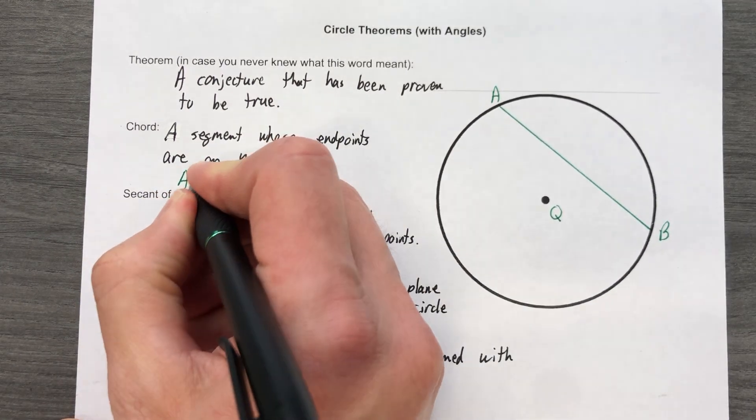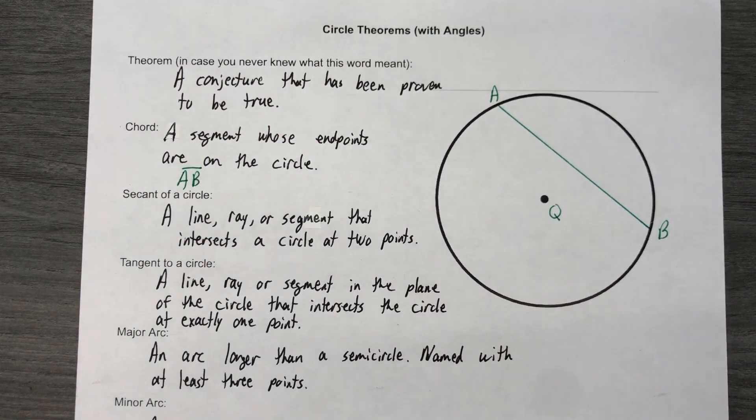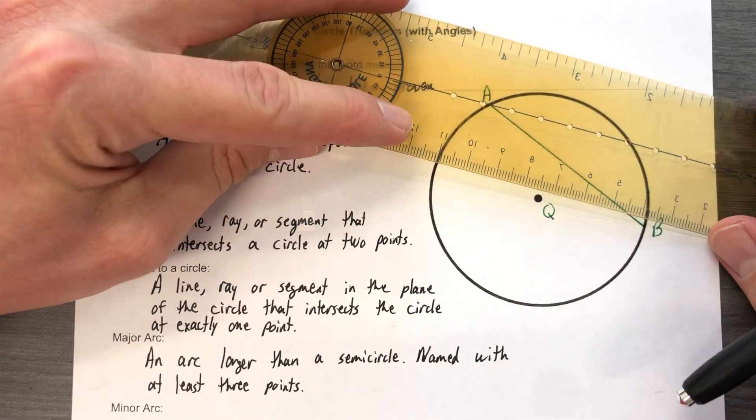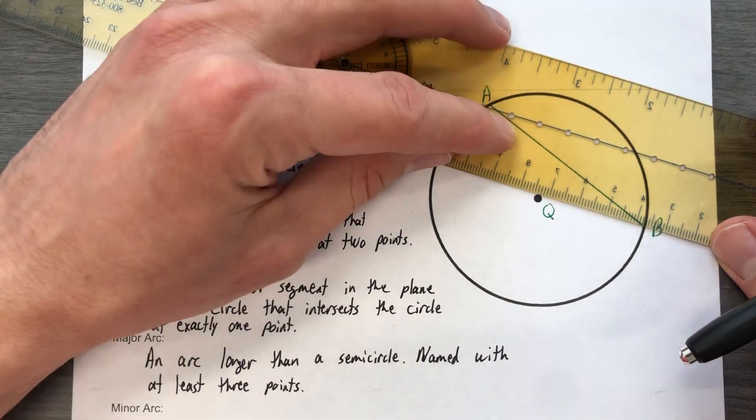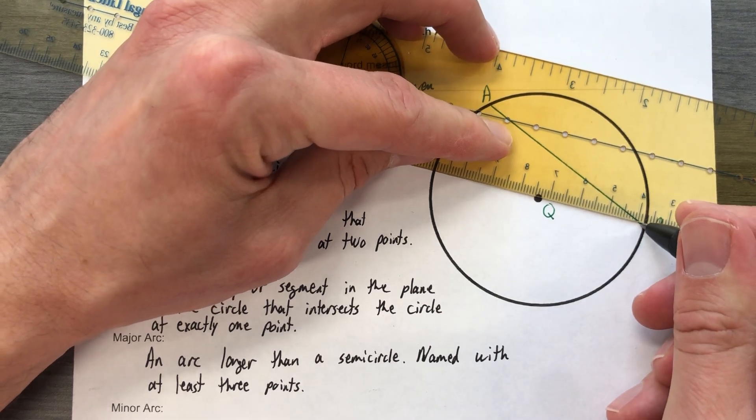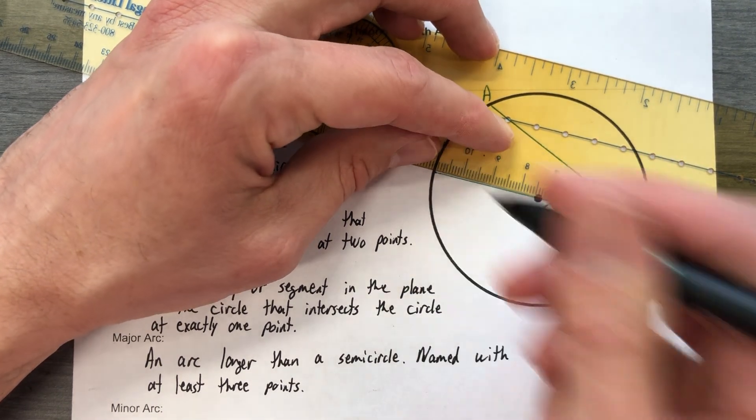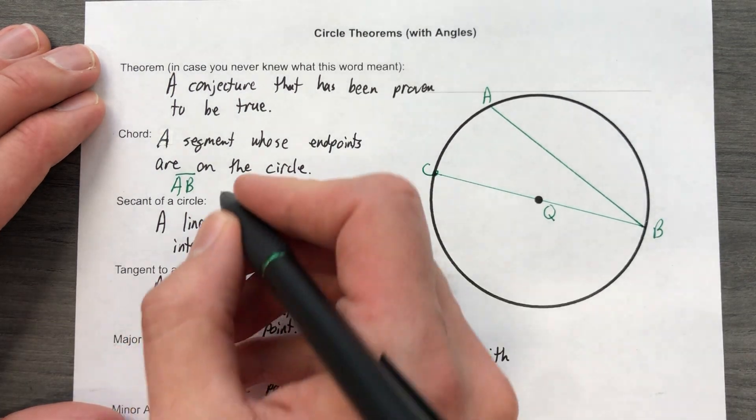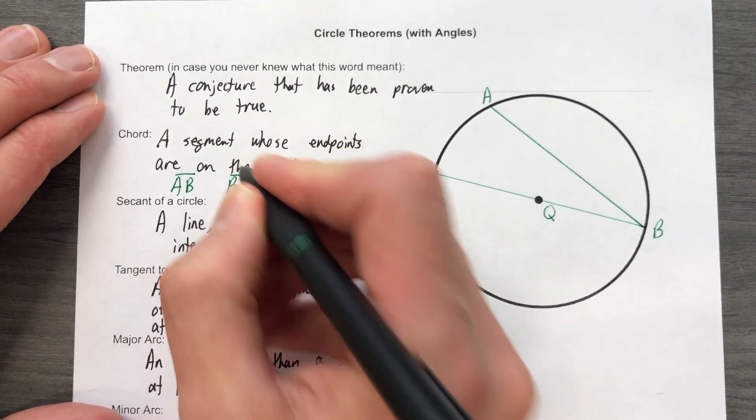Also, chords could be diameters. That means that this—I'm making up points here—can also be a chord. So BC is a chord, but it goes through the center, so therefore it is a diameter, still a chord though.